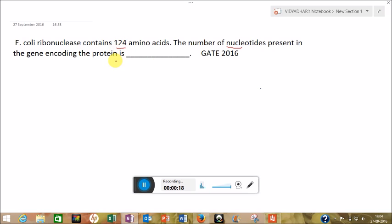So they are asking for the number of nucleotides in 124 amino acids. To solve this question, you should know that one amino acid is coded by three nucleotides. So 124 will be coded by 124 times 3.